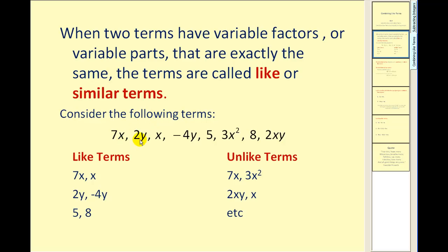If we consider the following list of terms, 7x and x are considered like terms because their variable factors, in this case x, are exactly the same, in this case x to the first power.